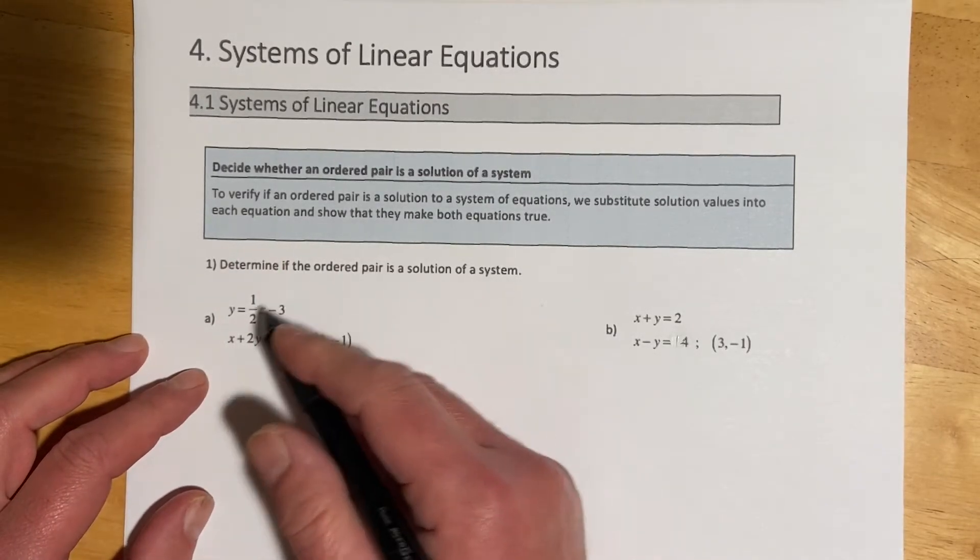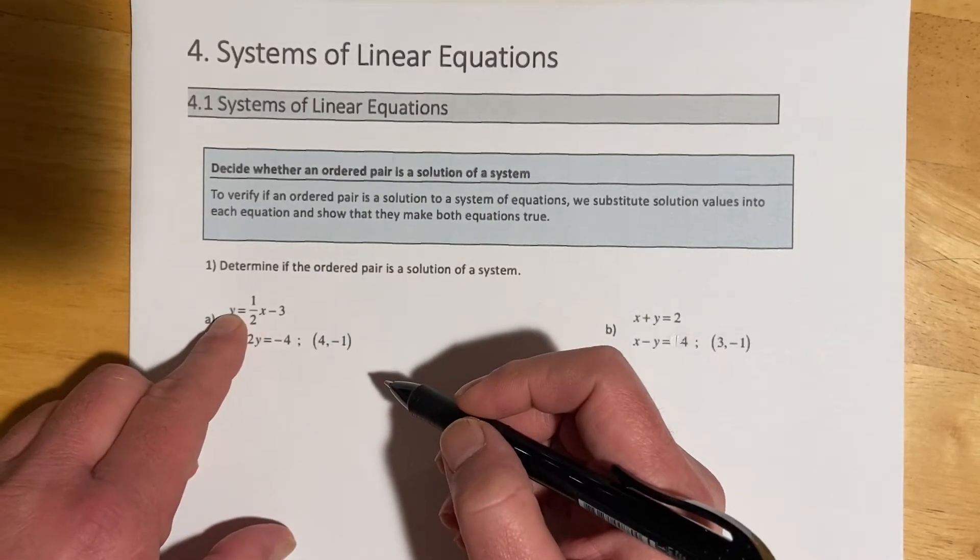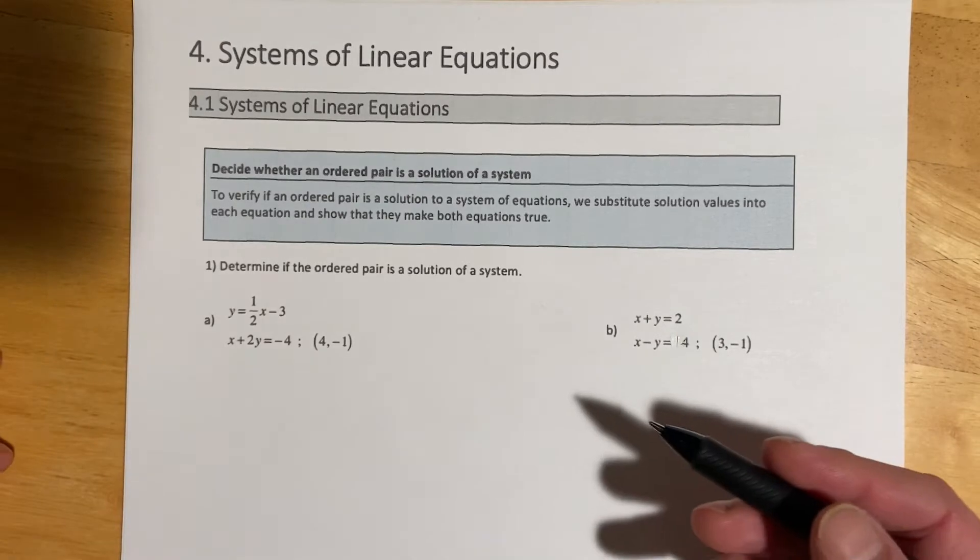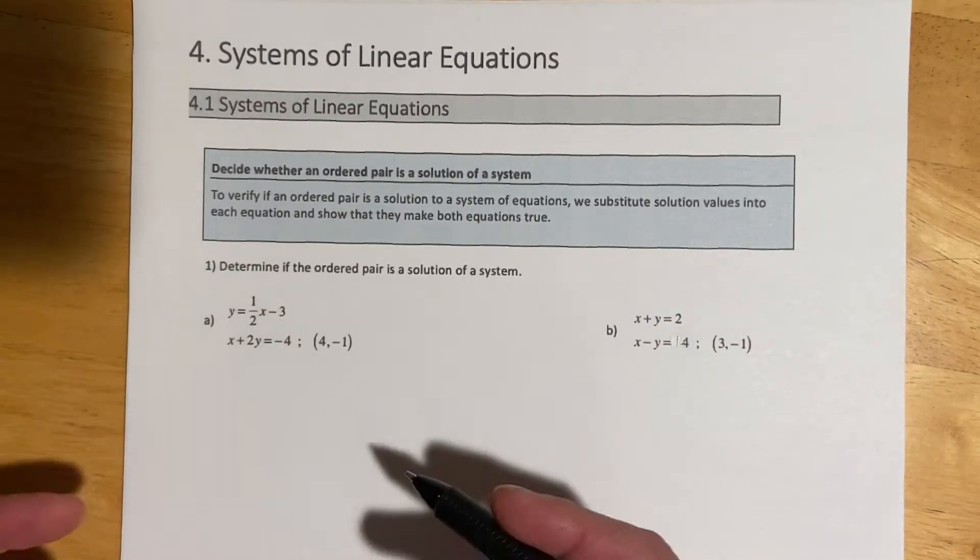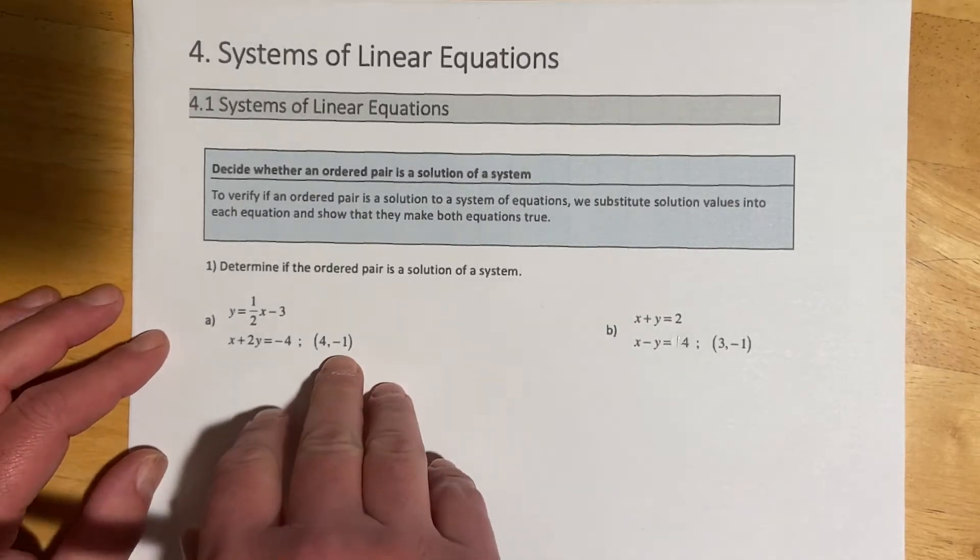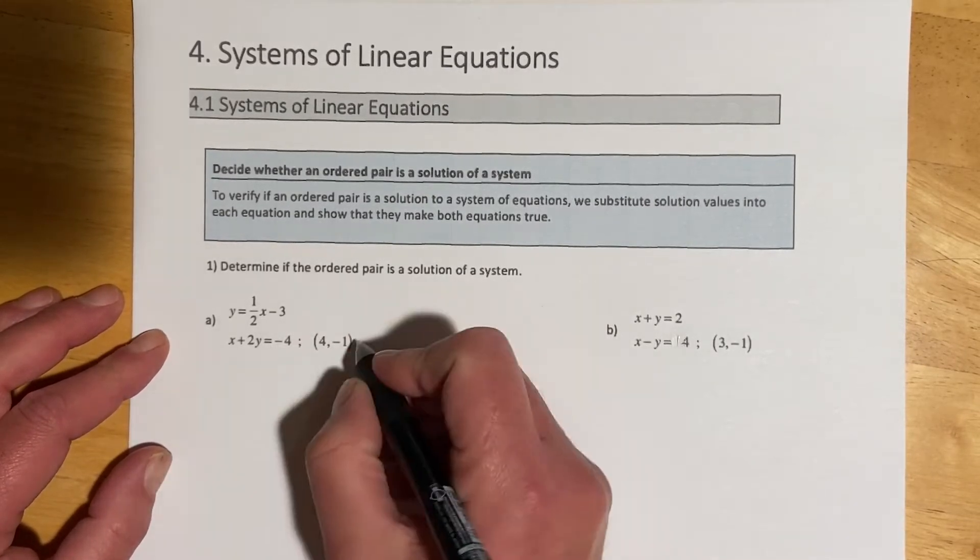And so to determine whether or not this point is a solution to this system, all we have to do is plug it into the first one, see if it comes out true, plug it into the second one, see if it comes out true, and if it does that both times, then that point satisfies the system. So that's pretty much what this chapter is going to be about. Let me show you how this looks with an ordered point. So again, this is just saying, hey, let's see if it is a solution.